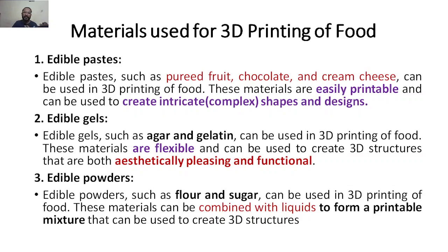Edible gels such as agar and gelatin can be used in 3D printed food. They have a flexible property and can be used to create structures that are both aesthetically pleasing and functional. Edible powders such as flour and sugar can also be used in 3D printing foods — these components can be combined with liquids to form a printable mixture to create 3D dimensional structures.